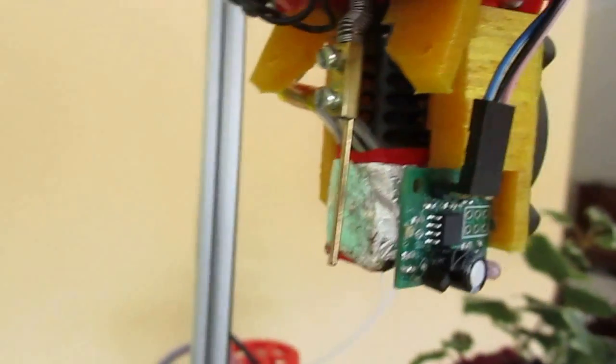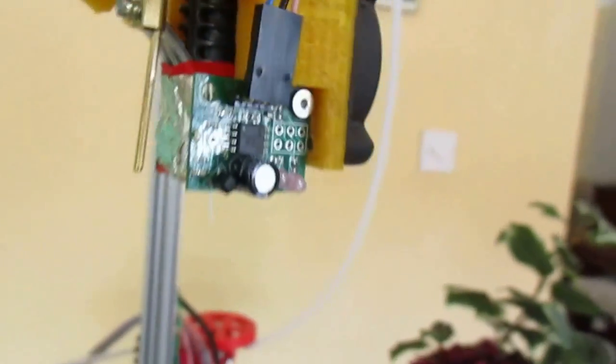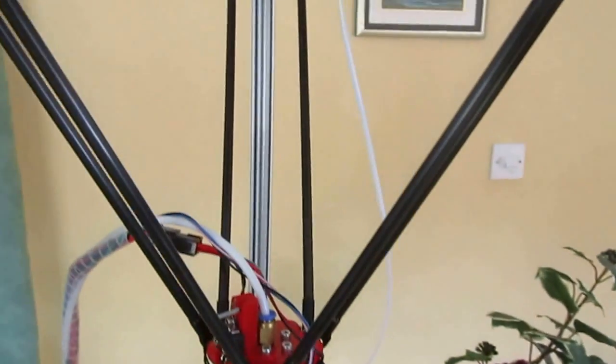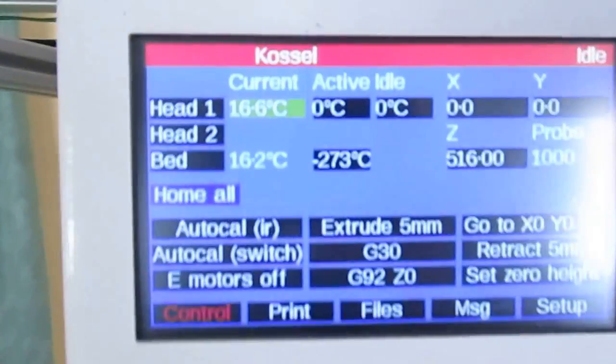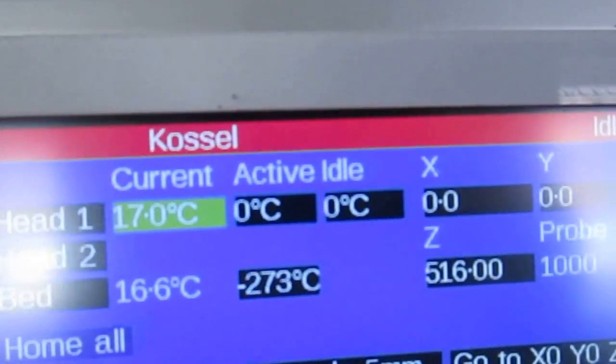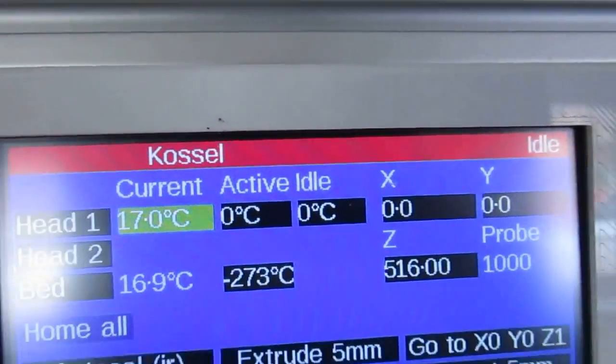I have two Z probes on this. I have the mini IR board there and I also have the original mechanical Z probe there and in fact at the moment I can use either of them. But for this demonstration I'll use the infrared probe. So going back to the control panel I'll touch the Auto Cal IR.